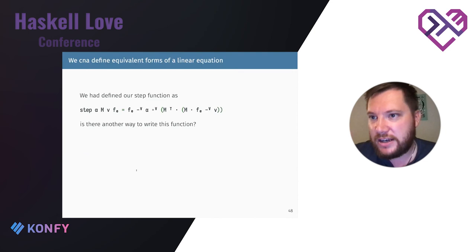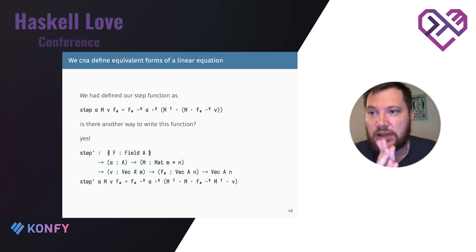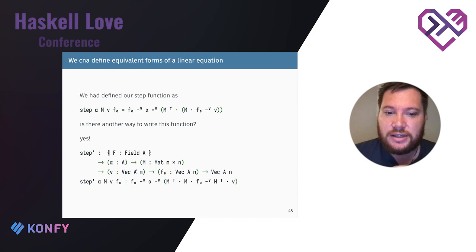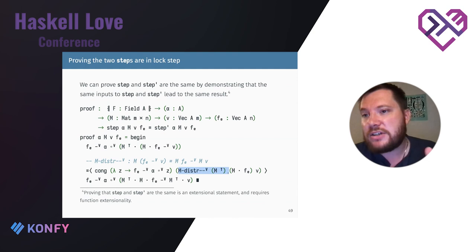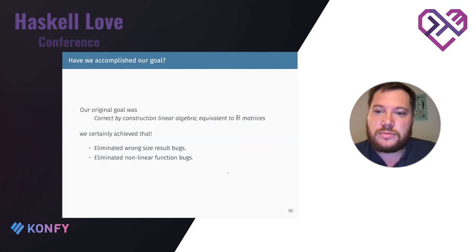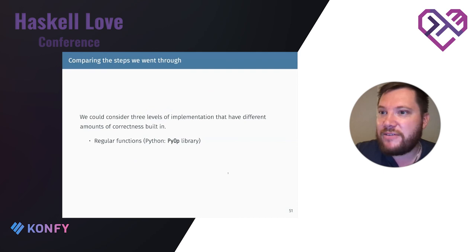Using equational reasoning, you can define the cost/step function and then expand it into an equivalent but potentially more efficient form. Proofs defined in the linear algebra library put the pieces together and allow you to show that two definitions of your linear algebra algorithm are the same. We've reached our goal: we've eliminated all wrong-size bugs, non-linear function problems, and incorrect function pairing bugs.